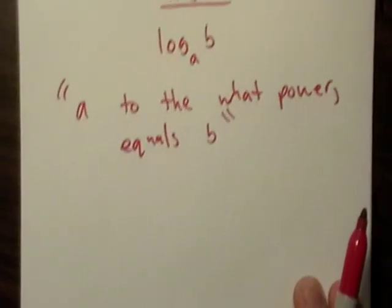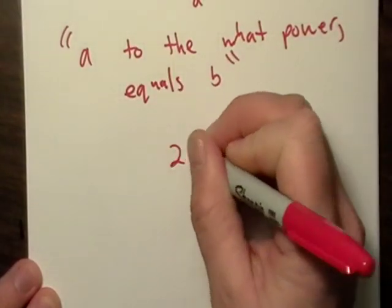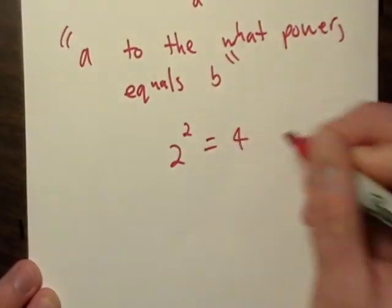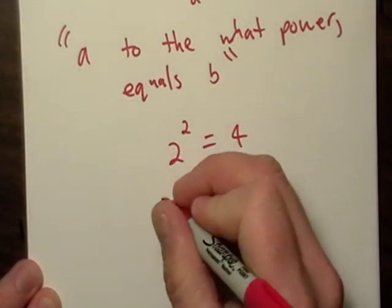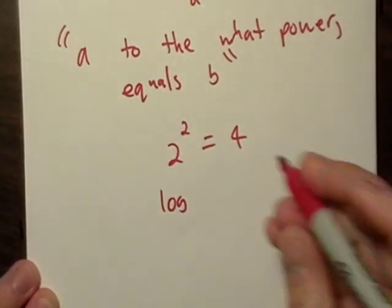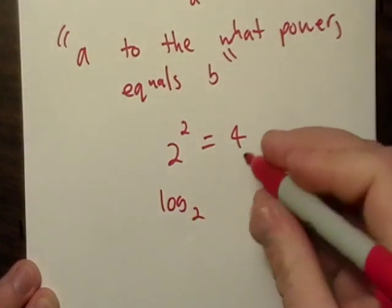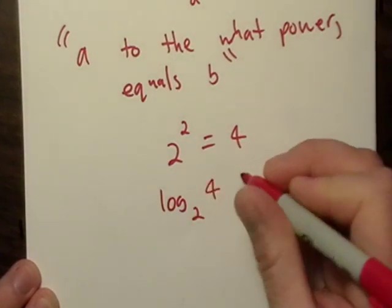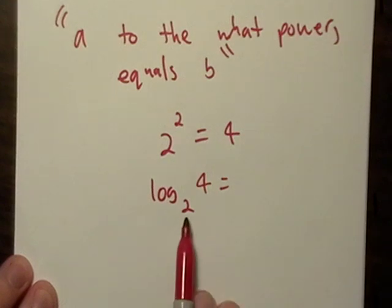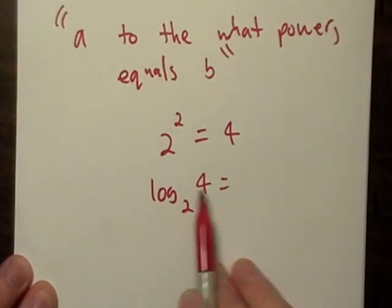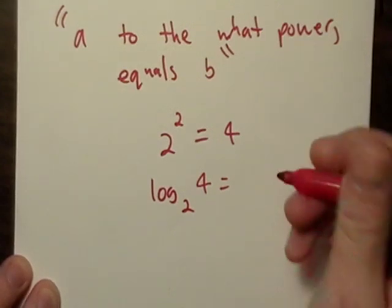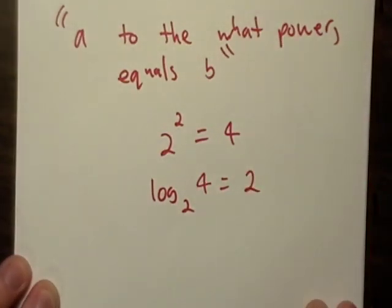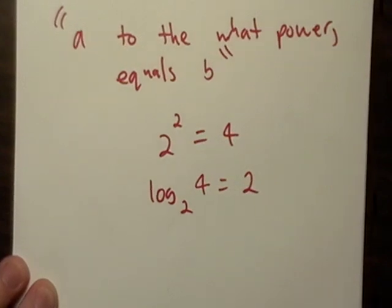So if I, you probably already know this, 2 squared equals 4. Okay, so I could say log 2 of 4. That means 2 to the what power equals 4? Well, 2 to the second power equals 4. So, bada bing, bada boom. There we go.